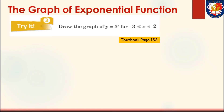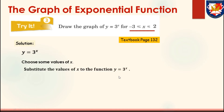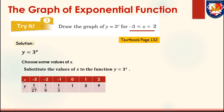This is an example of how to sketch the graph of an exponential function. Try 3: draw the graph of y equals 3 to the power of x for negative 3 less than or equal to x less than or equal to 2. For y equals 3 to the power of x, choose some values of x from the given interval, then substitute those values into the function. Here is the table showing the values of x and y.